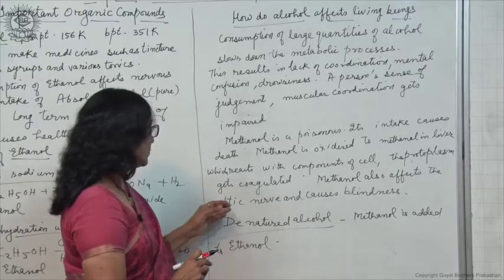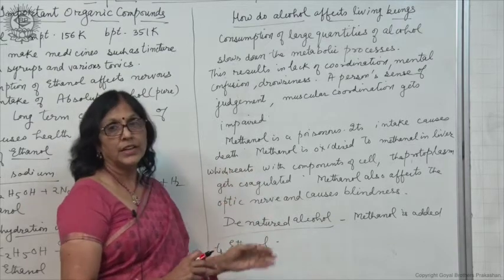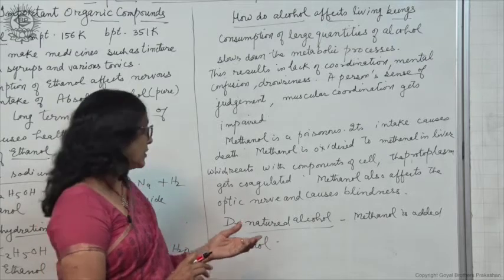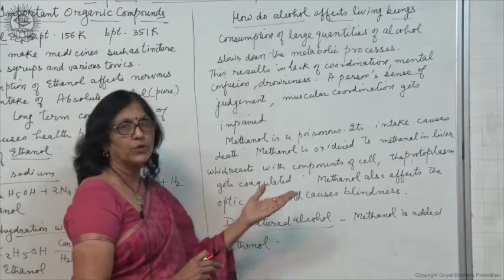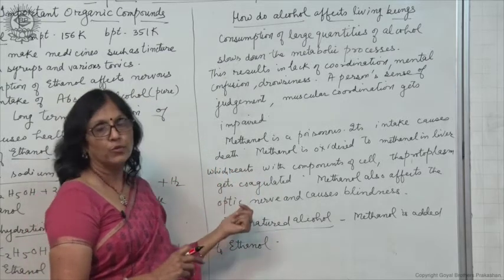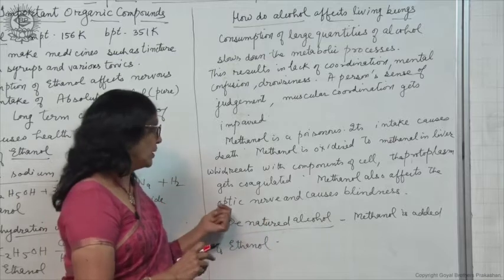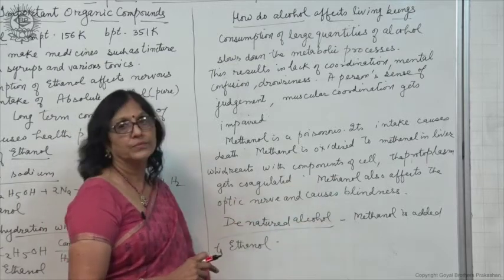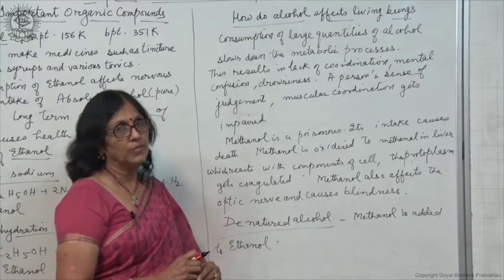If it is taken inside the body, it goes to the liver and gets oxidized to methanal, an aldehyde, and it reacts readily with the components of the cell. The protoplasm of the cell gets coagulated, just like when you boil an egg. Methanol also affects the optic nerves and causes blindness.